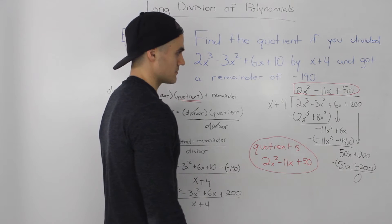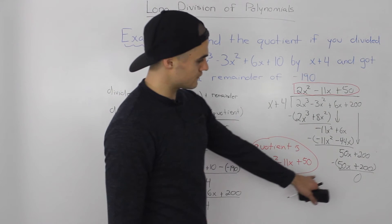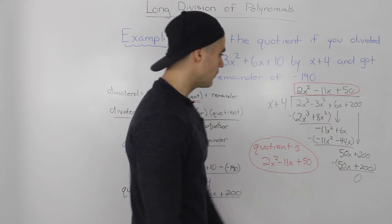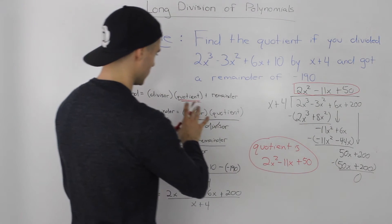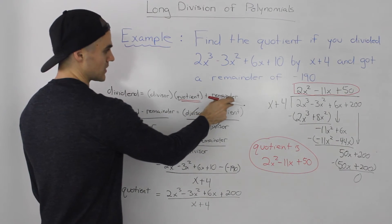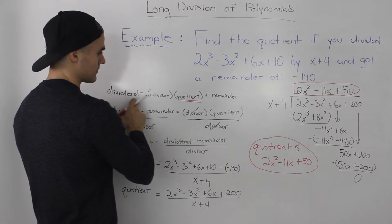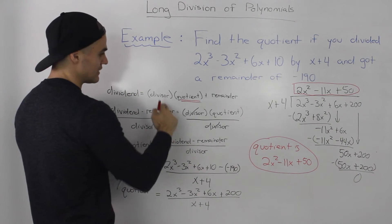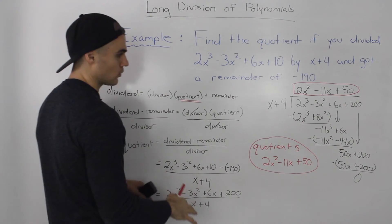A couple of things I want to make a note on. First, notice how we got a remainder of 0 here. That will always happen when you are solving for either the divisor or the quotient, because we subtract the remainder from the dividend, and then the dividend is going to divide evenly by either the divisor or the quotient.